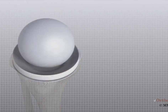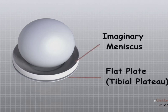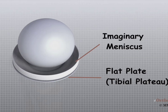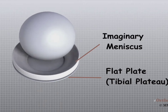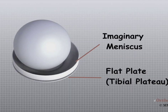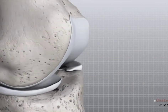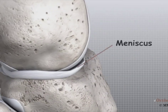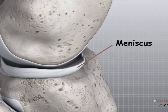Imagine the knee is a ball resting on a flat plate. The ball is the condyles of the femur, and the plate is the tibial plateau. The menisci actually wrap around the round condyles to fill the space between it and the flat tibial plateau. The menisci act like a gasket, helping to distribute the weight from the femur to the tibia. Without the menisci, any weight on the femur will be concentrated to one point on the tibia, but with the menisci, weight is spread out across the tibial surface.